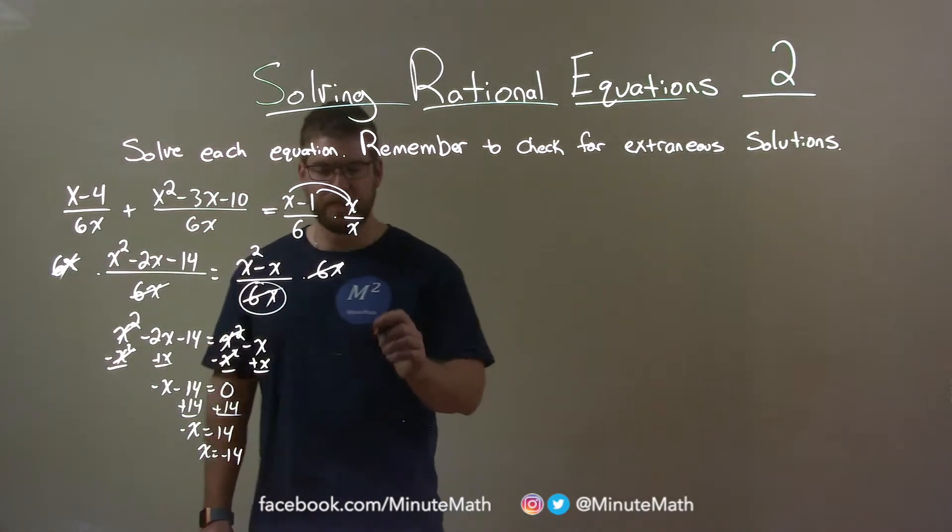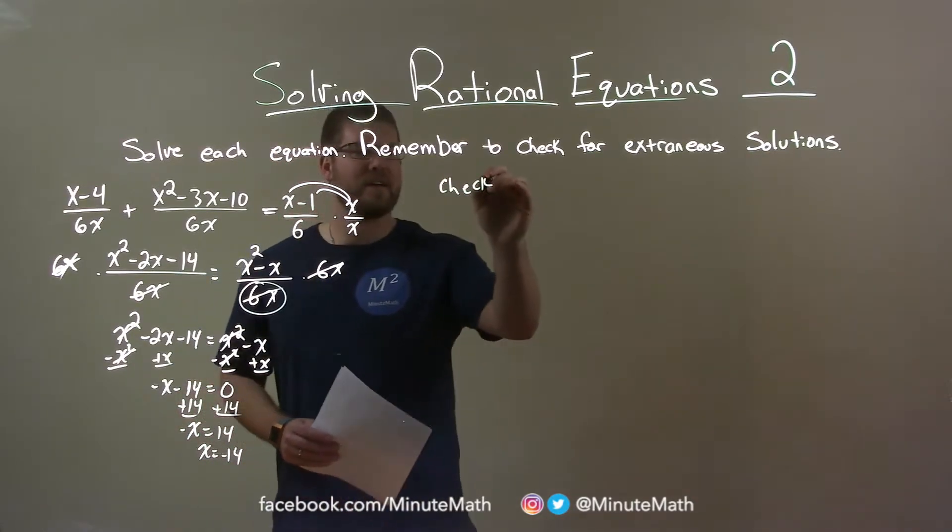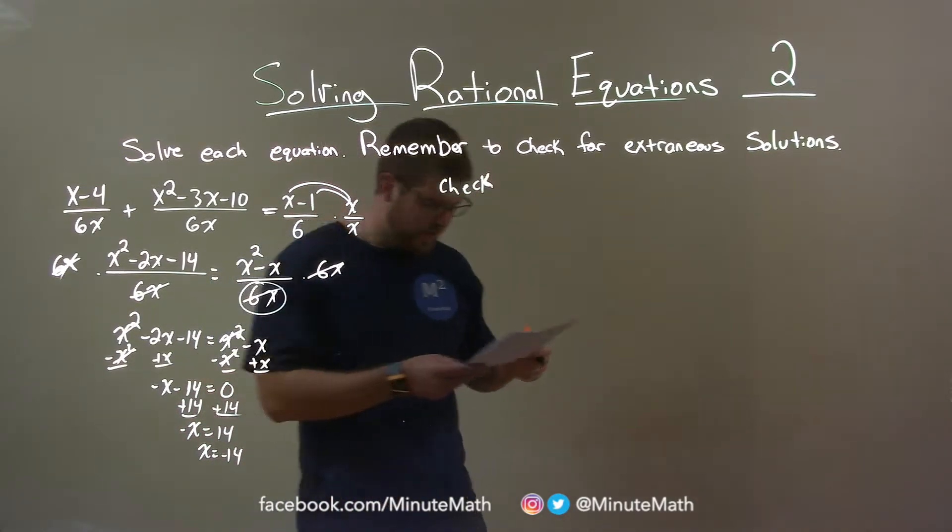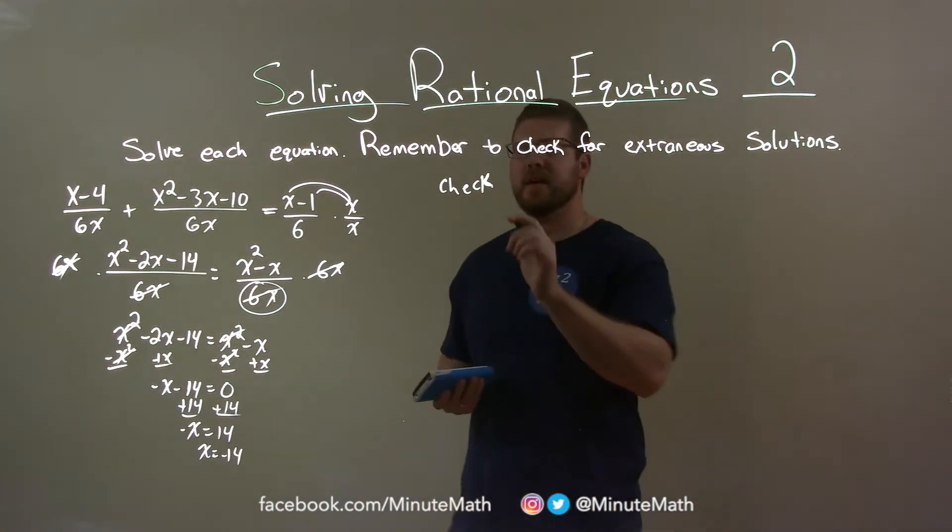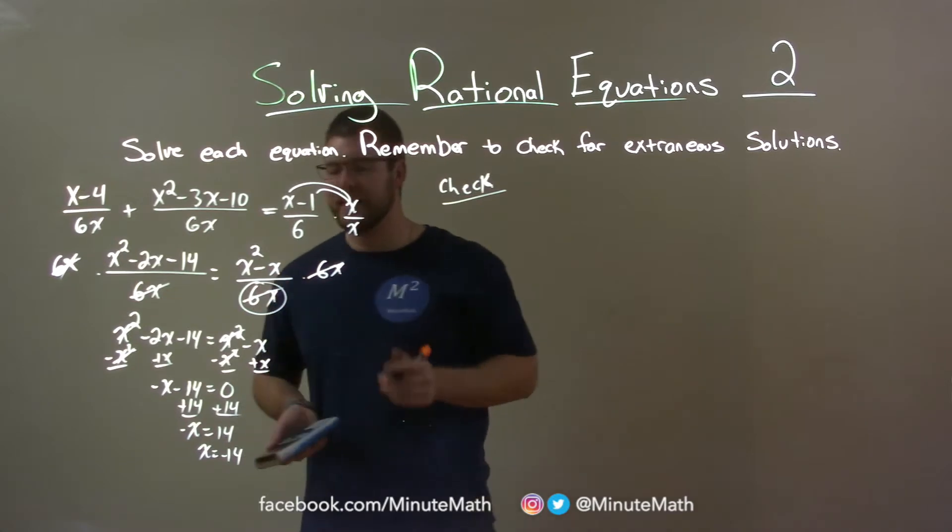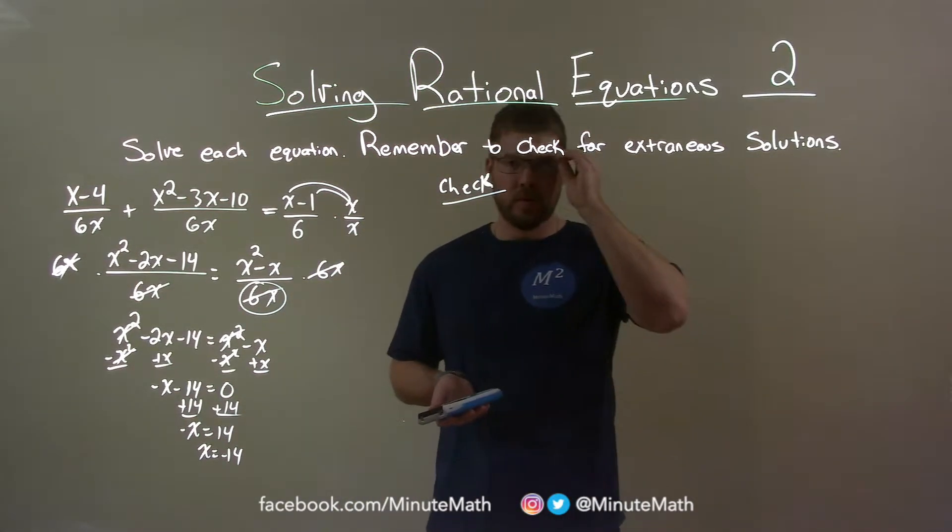So they tell us though that we need to check this, right? Check that answer. So to do that we take our original equation and we plug in negative 14 in for x and see if the left and right hand side are equal.